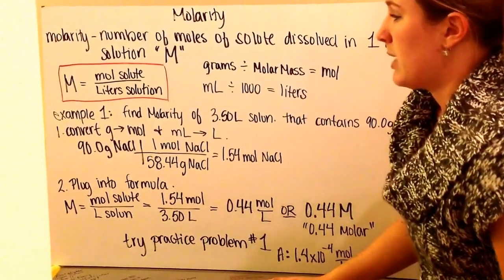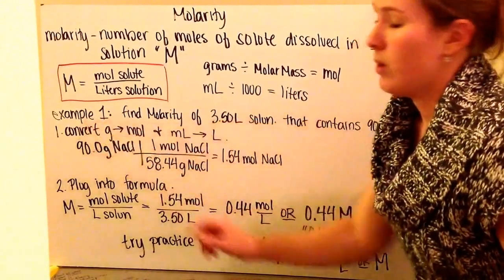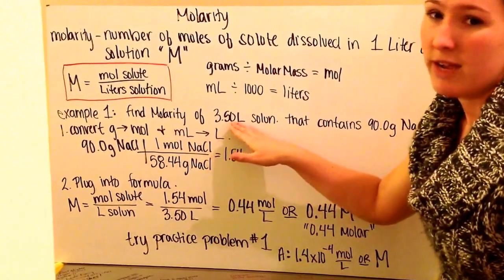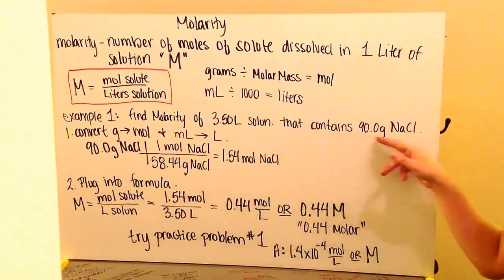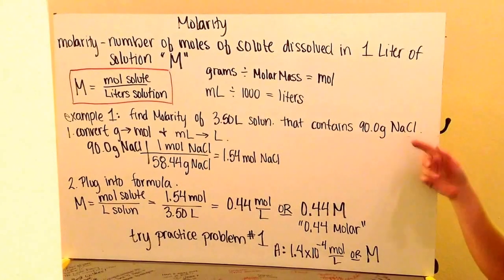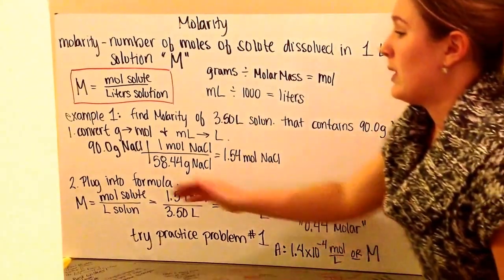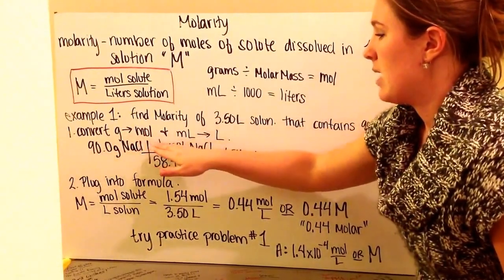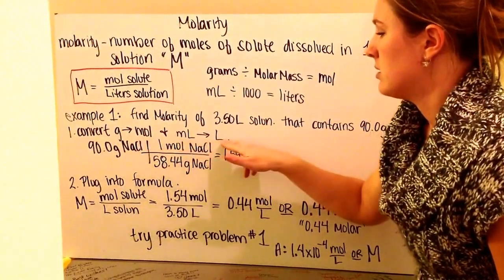Let's put this into play. Example number one asks you to find the molarity of a 3.5-liter solution that contains 90 grams of sodium chloride. We know that we first need to convert grams to moles, and we also need to convert milliliters to liters when necessary.